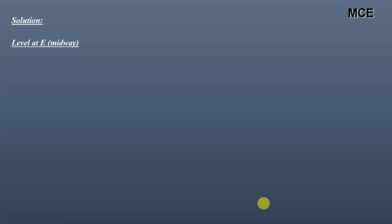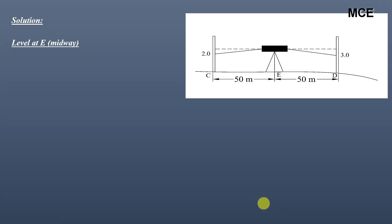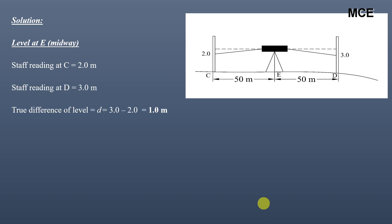First, when the level is at point E, midway between C and D — C and D are 100m apart — the staff reading at C is 2m and staff reading at D is 3m. The true difference of level is 3 minus 2, which is 1m. When the instrument is midway between the two staffs, we get the true difference of level, and in this case the collimation error is zero.